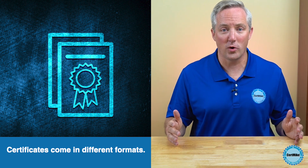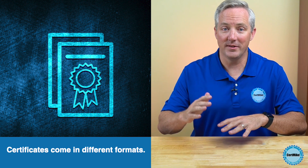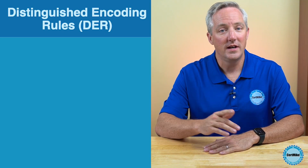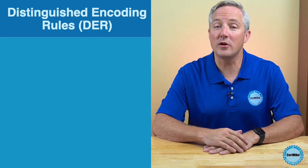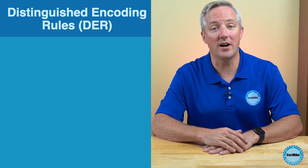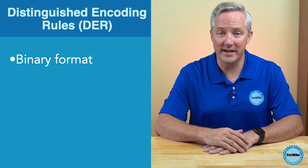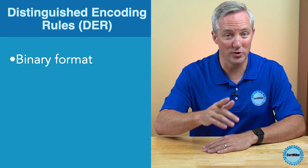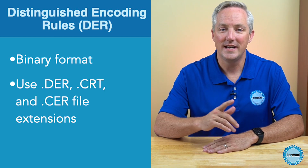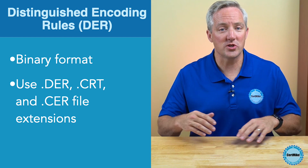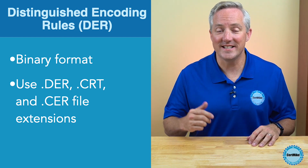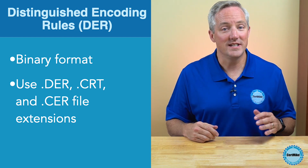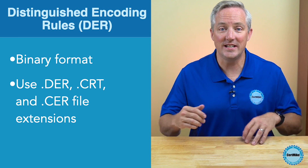Digital certificates come in a wide variety of different formats, both binary and text-based. Let's take a look at some common certificate formats. The most common format is the Distinguished Encoding Rules, or DER format. This is a binary certificate format, so it appears like nonsense if you try to view the certificate. DER certificates are normally stored in files with the .der, .crt, or .cer extensions.